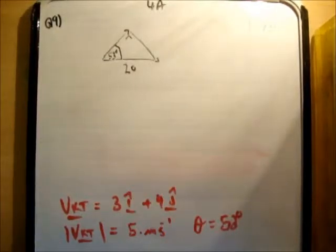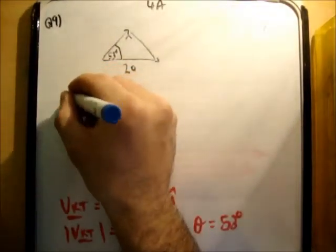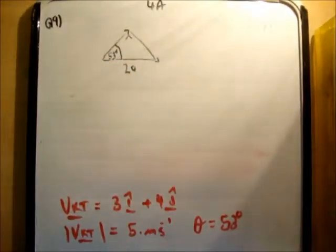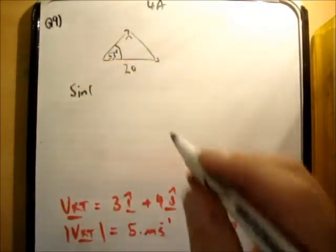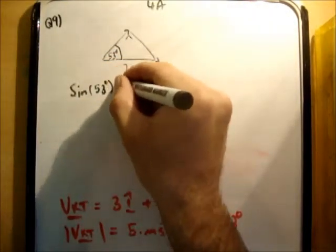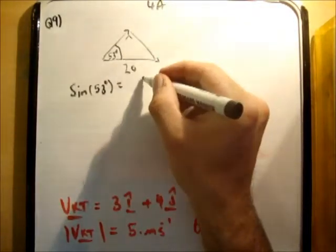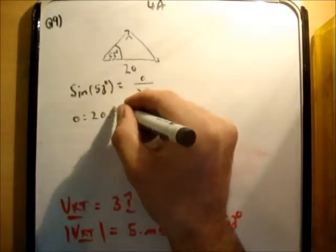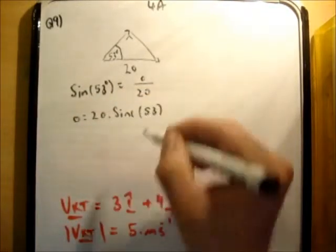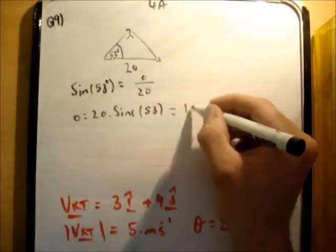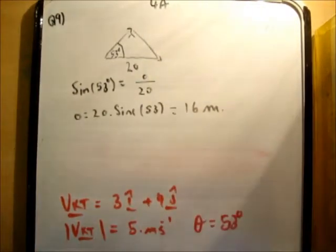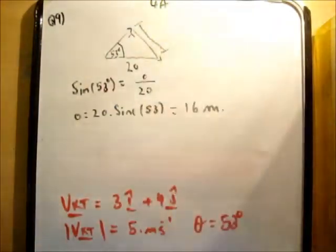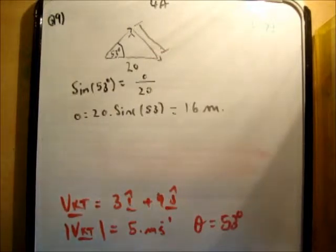So if we say, for example, what is sine of 53 degrees? Well, that's equal to its opposite here. We'll call this O over 20. Therefore, O is equal to 20 times the sine of 53. And that turns out to be 16 meters. This side here corresponds to the 90-degree angle, which corresponds to the minimum distance between them. And that's 16 meters. And that is correct.